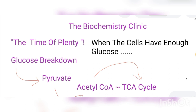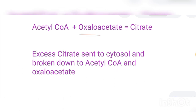Acetyl-CoA will combine with oxaloacetate to produce the first product, which is citrate. Now, in times of plenty, when there is plenty of acetyl-CoA combining with oxaloacetate and producing a lot of citrate, you'll find that citrate will stop proceeding through the TCA cycle.